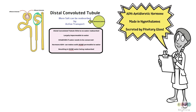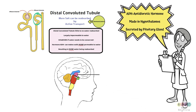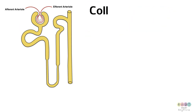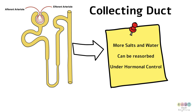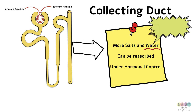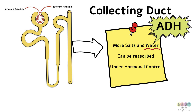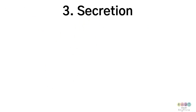ADH is known as antidiuretic hormone. It's made in the hypothalamus but secreted by the pituitary gland, both found in the brain. ADH is made in the hypothalamus, sent to the pituitary gland, and when needed, secreted into the blood and travels to the nephron. From the distal convoluted tubule we reach the collecting duct, where more salts and water can be reabsorbed under hormonal control. ADH is the hormone that controls reabsorption of water in both the collecting duct and the distal convoluted tubule.